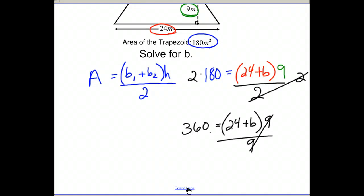Clears it here. Divide my 360 by 9. I'm left with 24 plus B here. And 360 over 9 is going to give me 40.